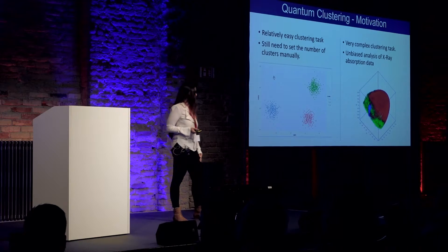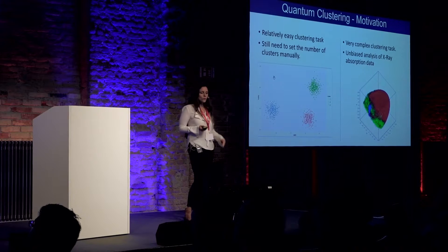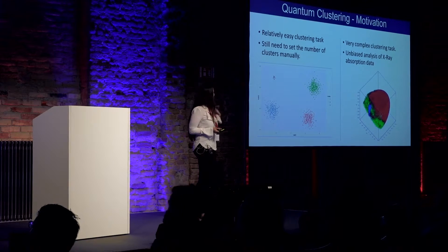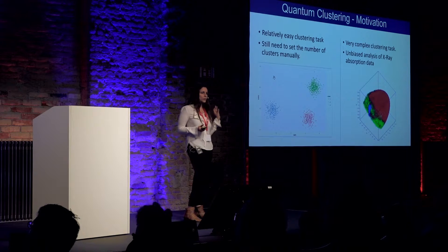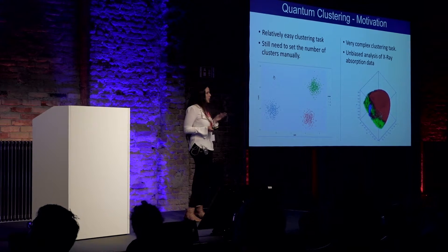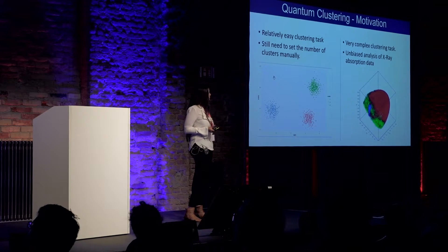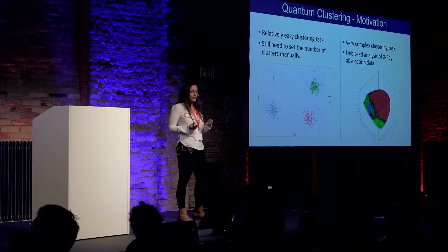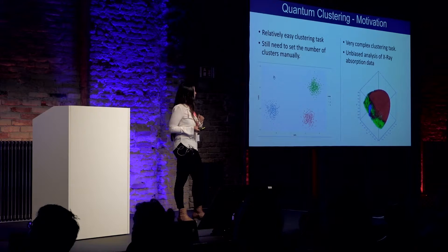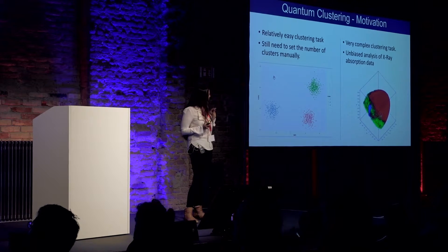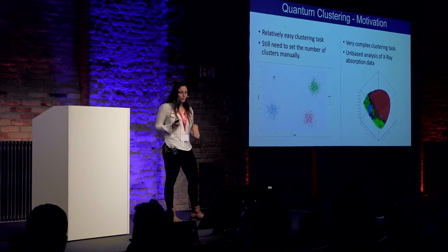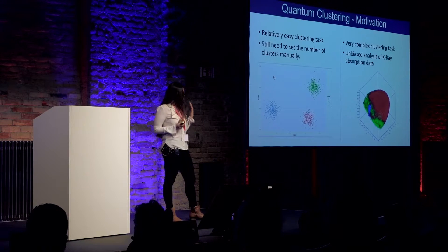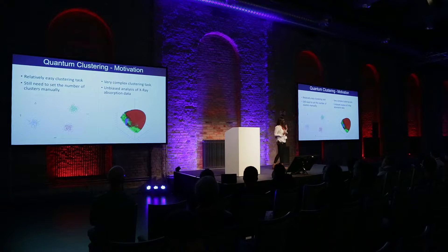So what's the motivation for quantum clustering? On the left side, you can see a relatively easy clustering task — there are three well-separated groups in the space, and most clustering algorithms will do just fine. However, on the right side, you can see a pretty complex clustering task. Data points are mixing together and the number of clusters is not clear at all. Here the data points are 70,000 pixels of a piece of art made of different materials.